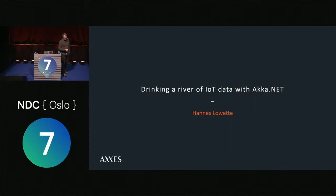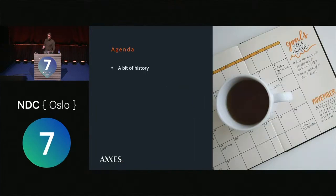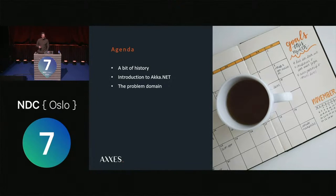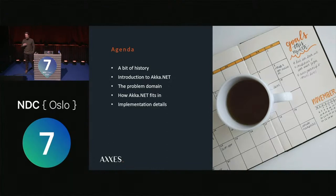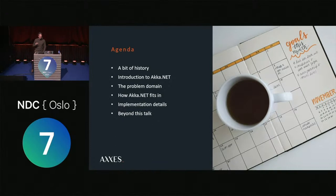Hello, my name is Hannes, and today I want to talk to you about ACA.NET. The agenda for today: I'll start with a bit of history, where it comes from and how we got to where we are. Then I'll give a brief introduction to how ACA.NET works behind the scenes, explain the problem we tried to solve, how ACA.NET fits in, implementation details, and wrap up with resources.